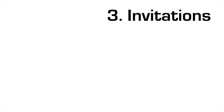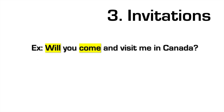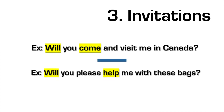So number three is for invitations. Here you need to use will plus you, usually, because you are inviting somebody to do something. So: will you come and visit me in Canada? You're inviting the person to come and visit you. Another example: will you please help me with these bags? — which is spontaneous and also an invitation to help with the bags.